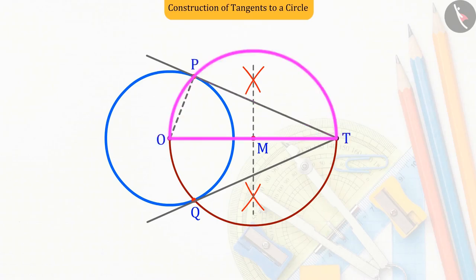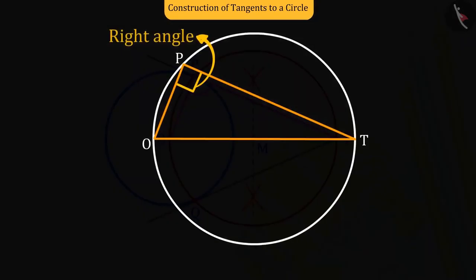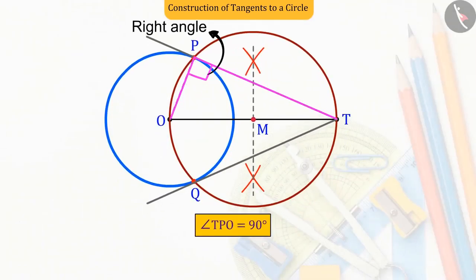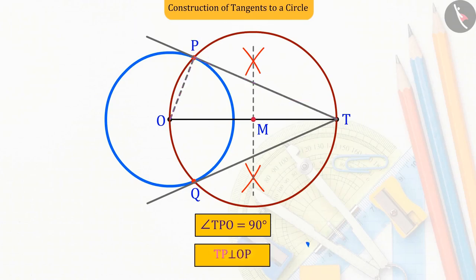So now, you can see that the angle TPO is an angle formed in a semicircle. And we know that the angle formed in a semicircle is a right angle. Hence, the angle TPO will be a right angle. So now, can we say that TP is perpendicular to OP? Absolutely correct. These two are perpendicular to each other.